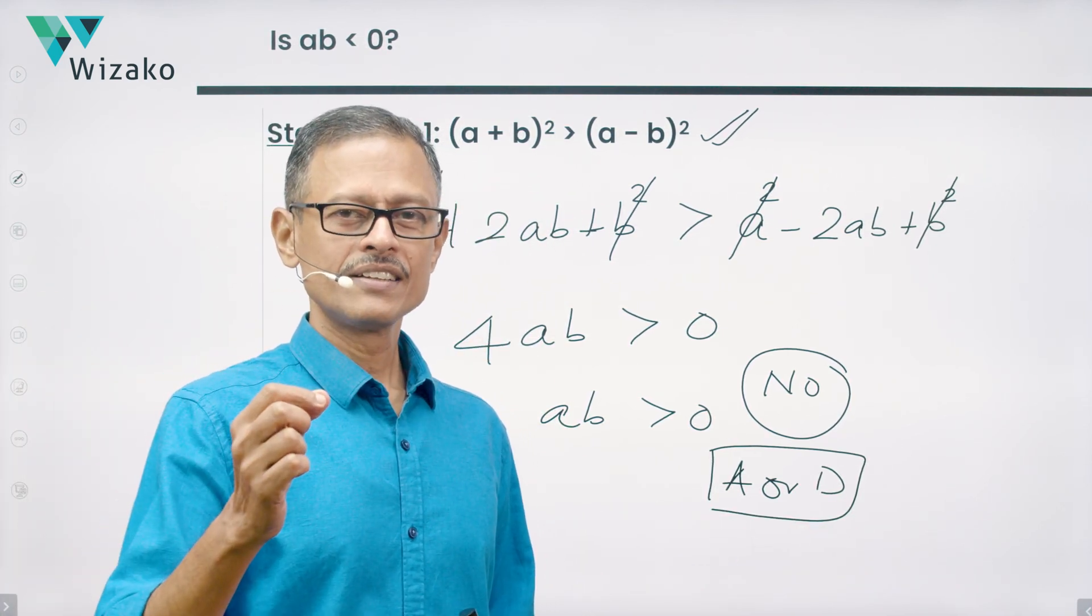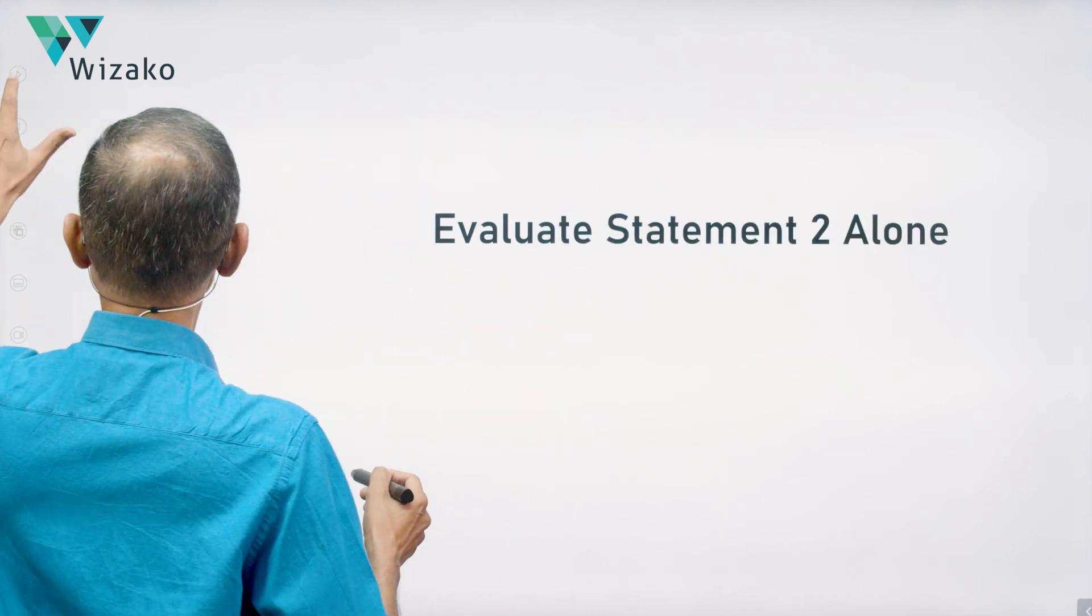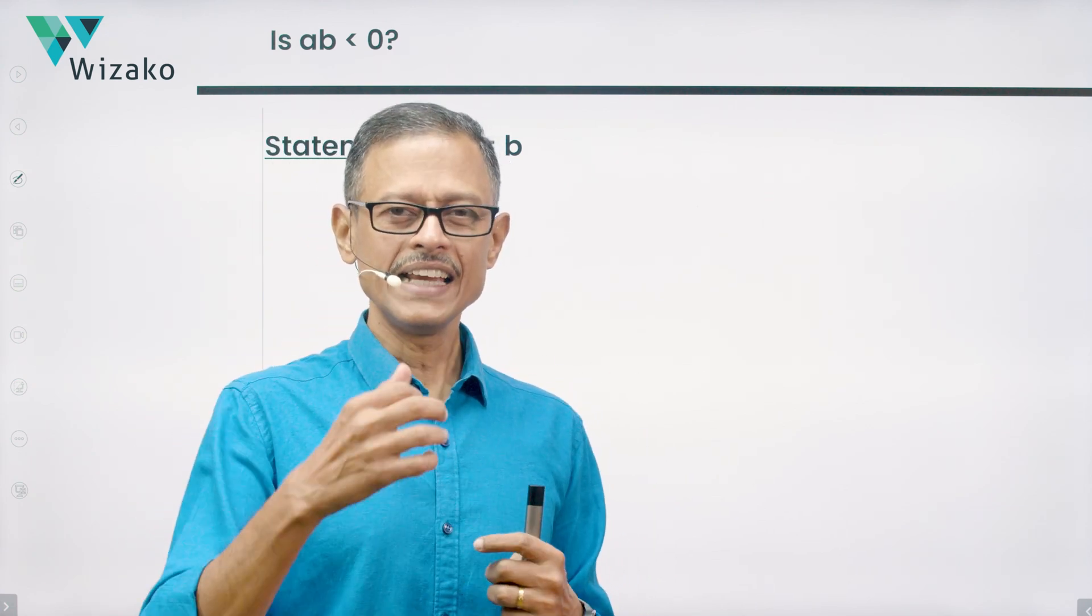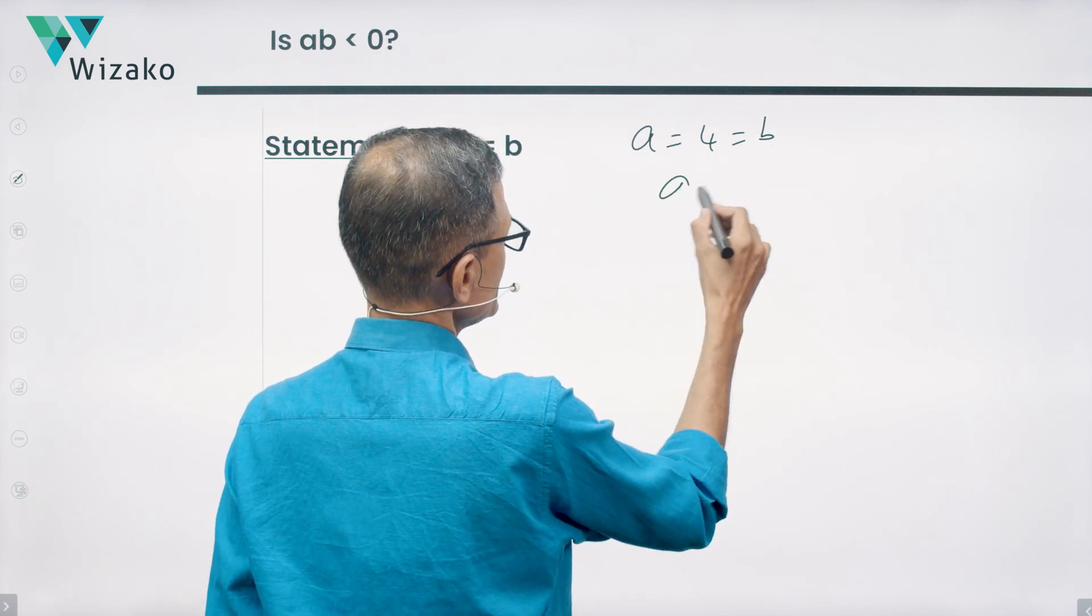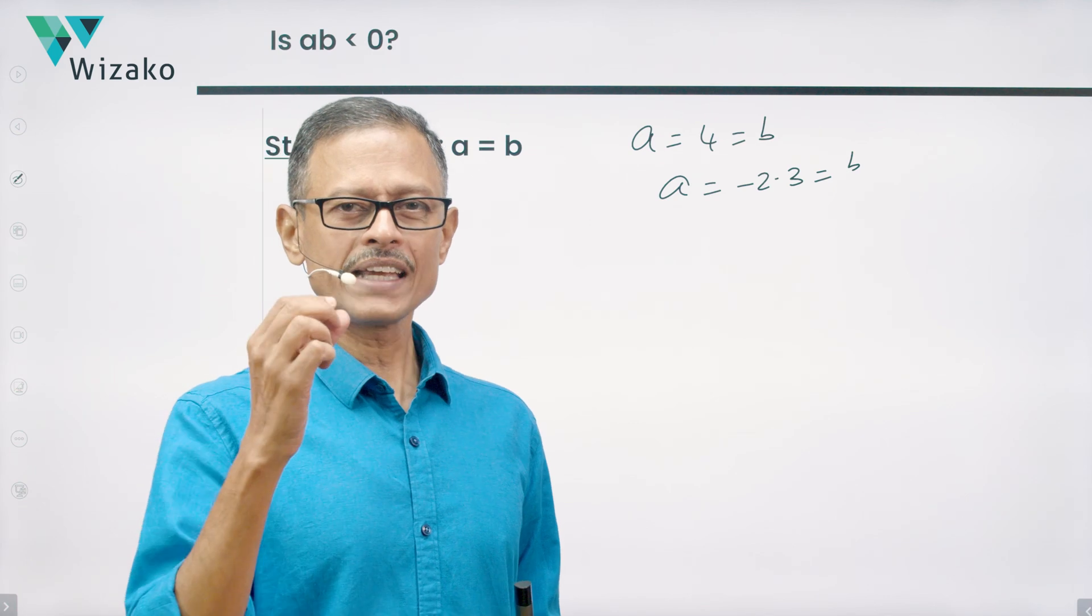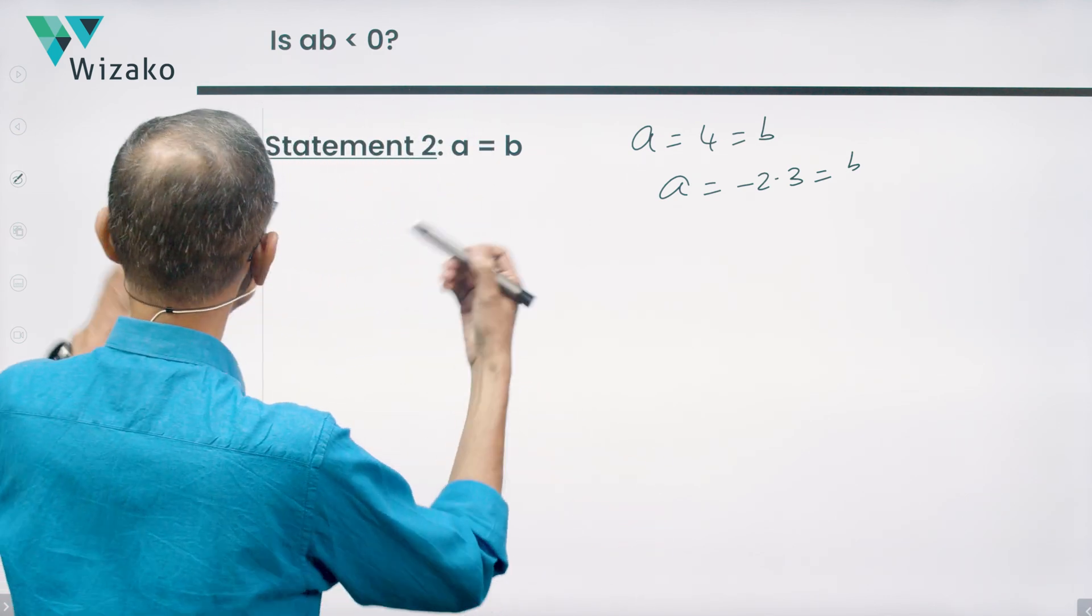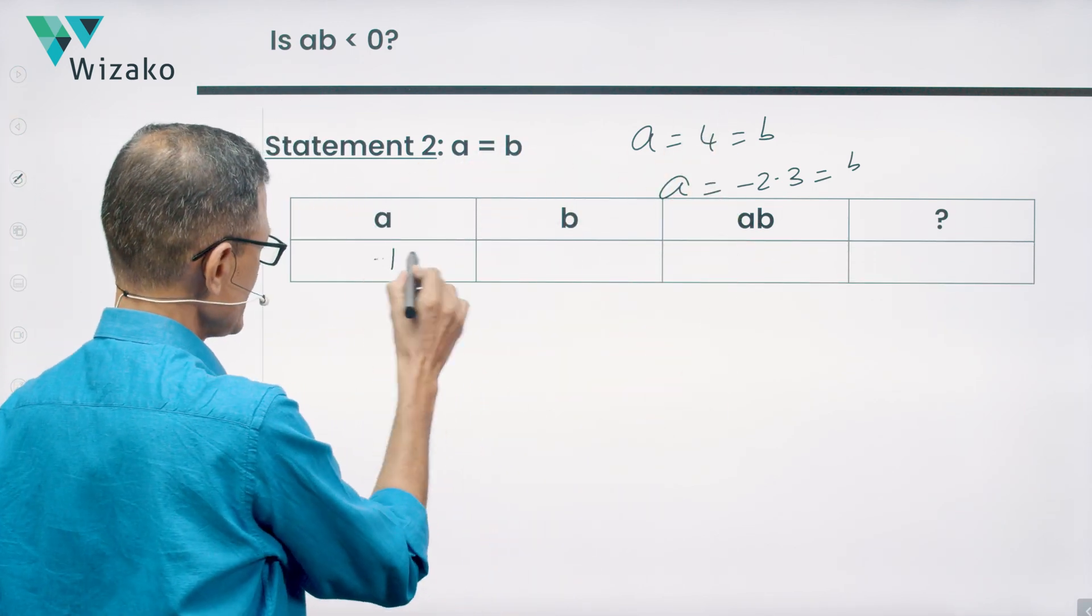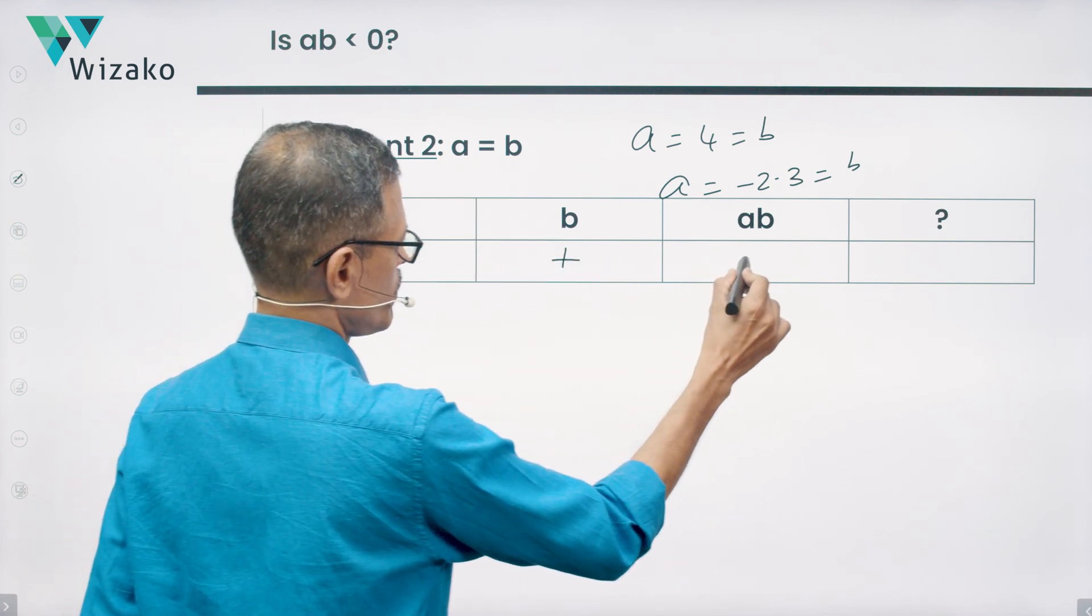Now to decide whether it's A or D, let's evaluate statement 2 and evaluate statement 2 alone. Statement 2 says that A is equal to B. Multiple possibilities are there. A equals B. If A is equal to a 4, then B will also be a 4. If A is equal to minus 2.3, then B can also be that. So essentially, we're looking at whether the product is negative or product is positive. A is equal to B. Both could be positive. Both will take the same values, 4, 7, 8, whatever it is. So if A is positive, then B will also be positive because A is equal to B.